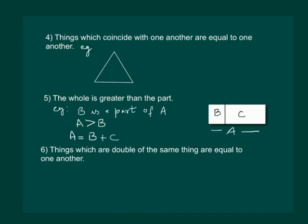Sixth Axiom says things which are double of the same thing are equal to one another. For example, if in some polygon, angle A is equal to two times angle C and angle B is also equal to two times angle C, this would imply that angle A is equal to angle B.